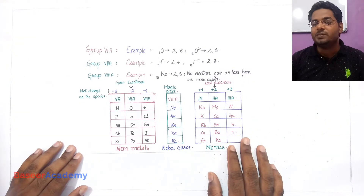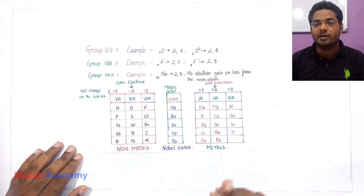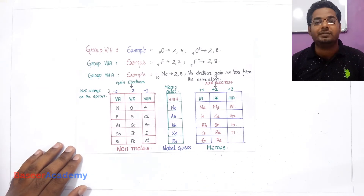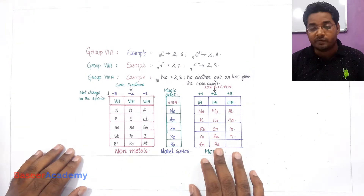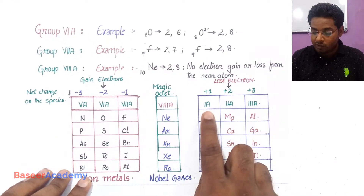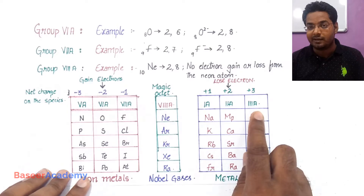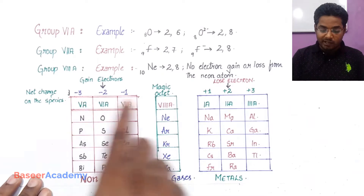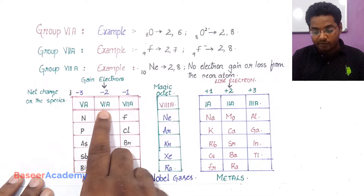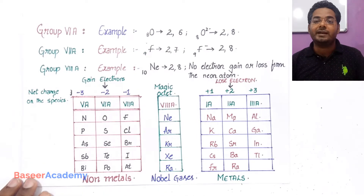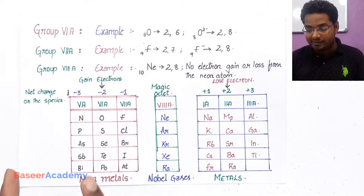Hi, my name is Vasir. In this video I'll be teaching you about ionic bonds and the formation of ionic bonds from Chapter 8, Chemical Bonding, Class 10 Telangana State Syllabus. Let me first recap what we have learned in the previous video. We saw that elements on the left-hand side of the periodic table belonging to groups 1A, 2A, and 3A tend to lose electrons and form positive ions, while elements on the right-hand side belonging to groups 5A, 6A, and 7A tend to gain electrons and form negative ions.